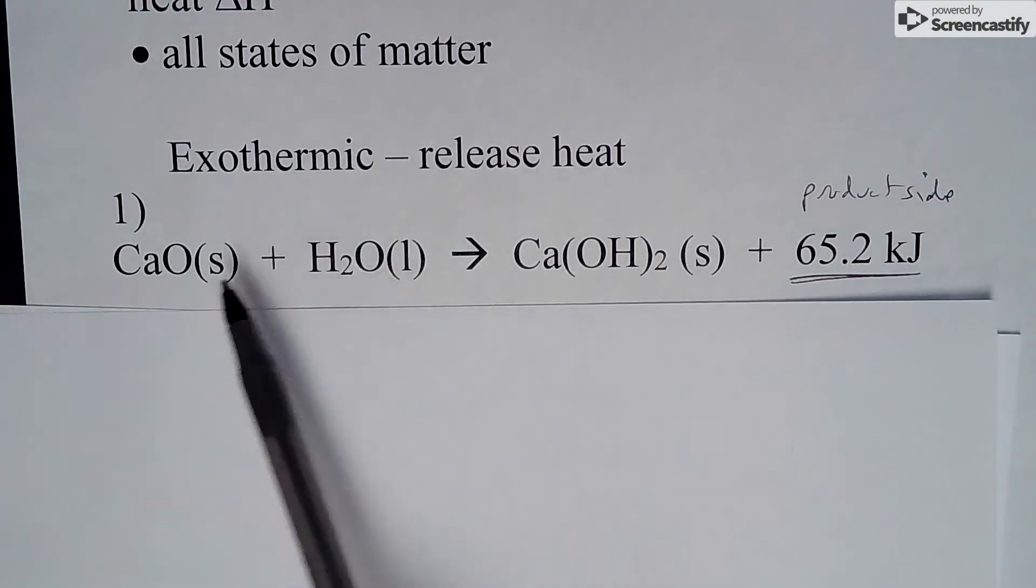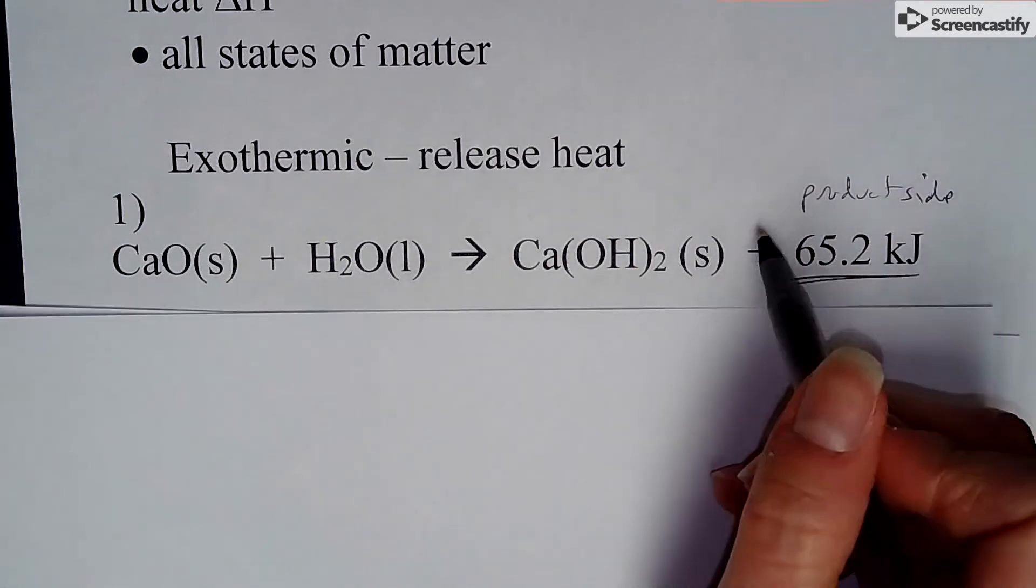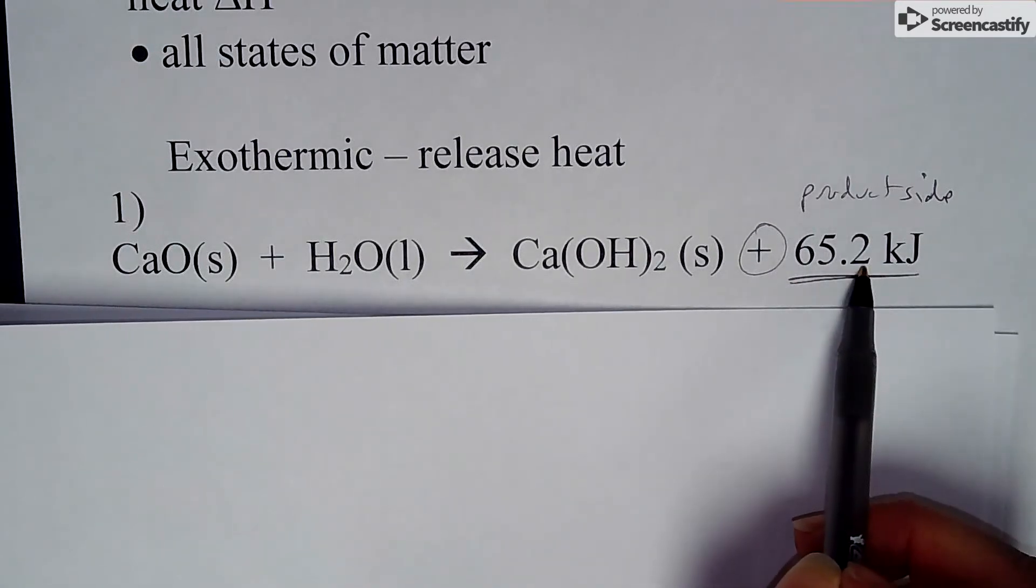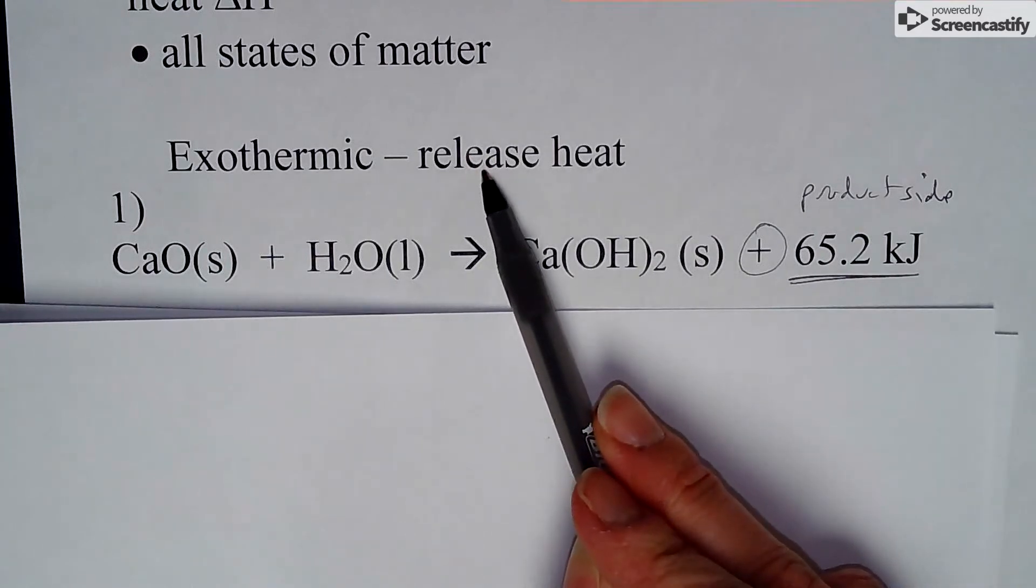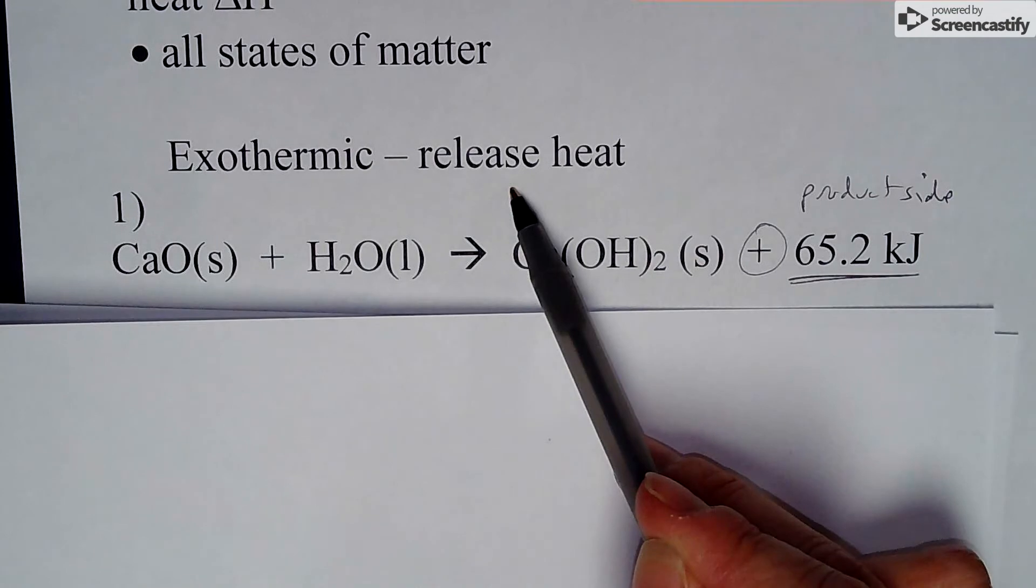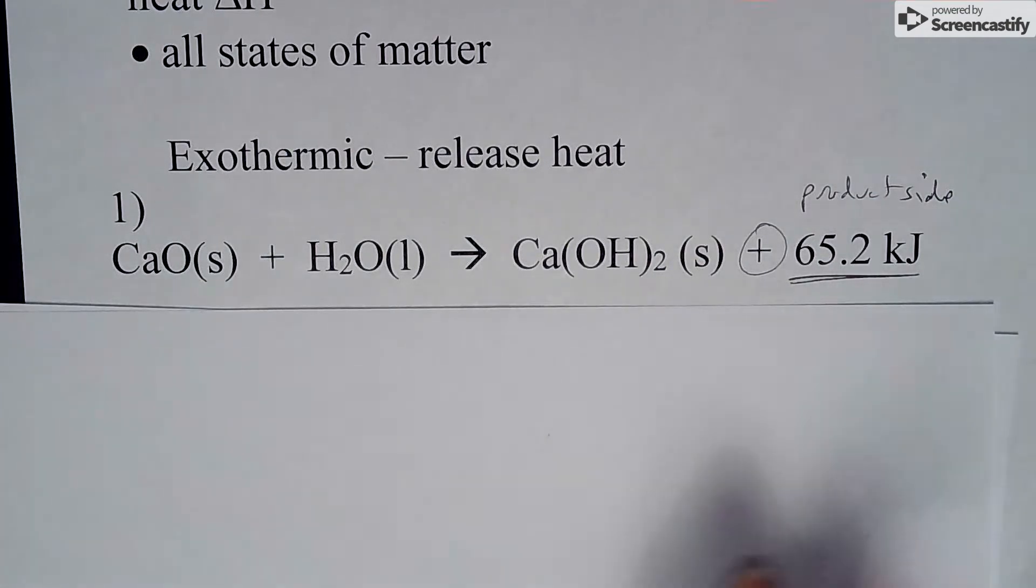Any time you see a chemical reaction and heat is listed here on the product side, that is considered to be exothermic. Notice here, it is a positive sign. It is not negative in this equation, because if you put it on the product side, that means you are releasing heat. If it's on the product side, we know it means release, so it doesn't need to have that negative. The negative is just to tell us direction.